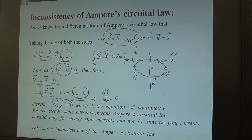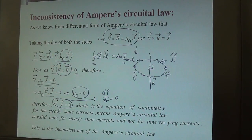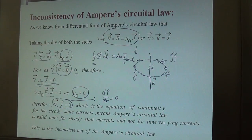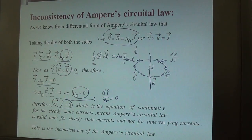From the continuity equation, ∇·J = 0 implies dρ/dt = 0, which is true only for steady-state current — meaning direct current. So Ampere's law is valid only for steady-state current. But what about time-varying current or alternating current? What form should the formula take when we consider alternating current?